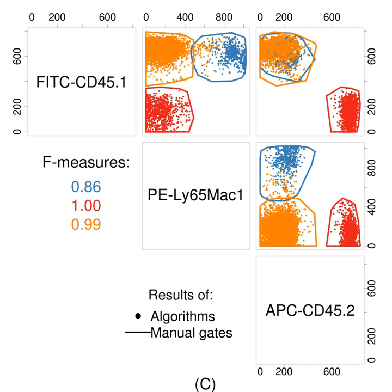Alternative transformations which address this issue include the log-linear hybrid transformations logicle and hyperlog, as well as the hyperbolic arcsine and the Box-Cox. A comparison of commonly used transformations concluded that the biexp and Box-Cox transformations, when optimally parameterized, provided the clearest visualization and least variance of cell populations across samples. However, a later comparison indicated that the flotrans package did not parameterize the logicle transformation in a manner consistent with other implementations, potentially calling those results into question.